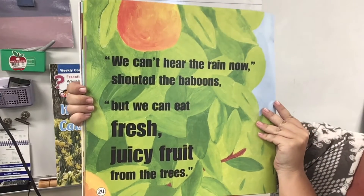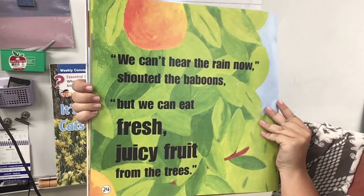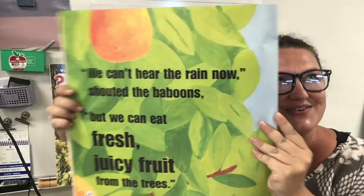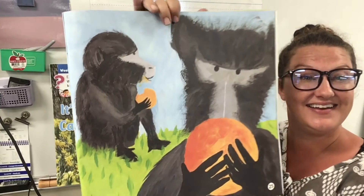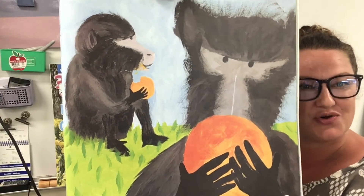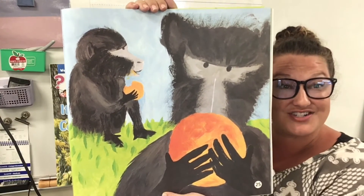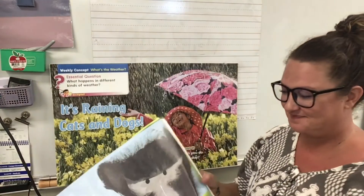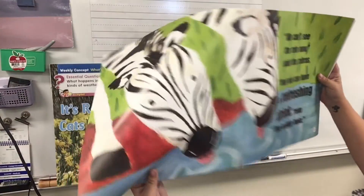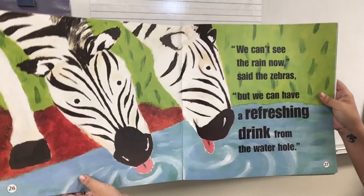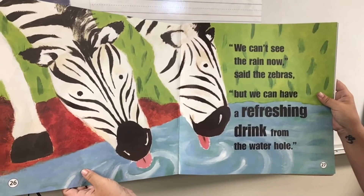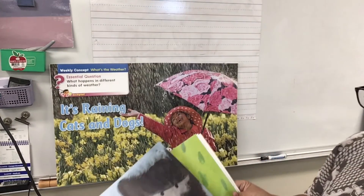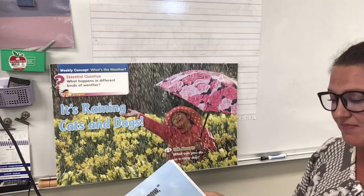'We can't hear the rain now,' shouted the baboons. 'But we can eat fresh, juicy fruit from the trees.' Oh, so the rain can be a good thing. Look at the baboons enjoying the fresh, juicy oranges that grew from the rain and the sun. 'We can't see the rain now,' said the zebras. 'But we can have a refreshing drink from the water hole.' So that's how they can taste the rain — they drink it from the watering hole.